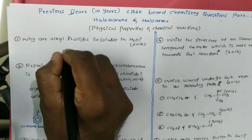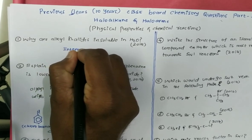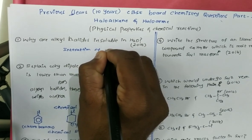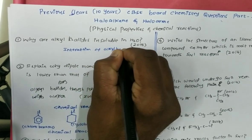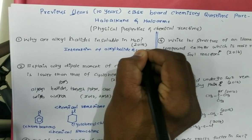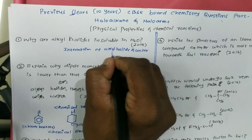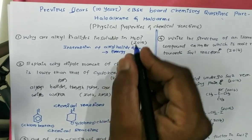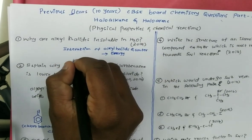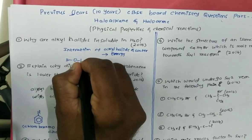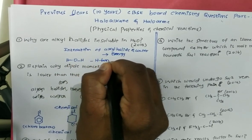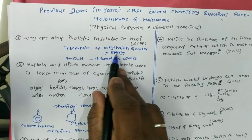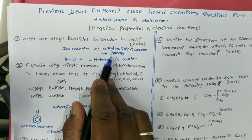This is because the interaction of alkyl halide and water produces some amount of energy, but this energy is less than the energy required to break the O–H hydrogen bond in water.